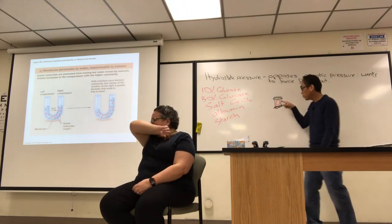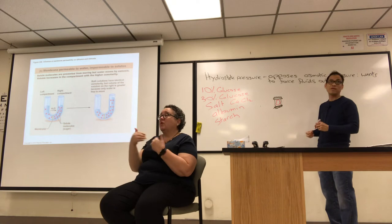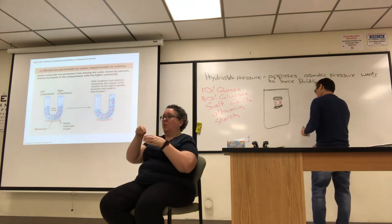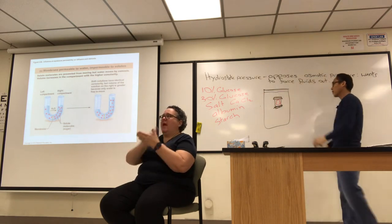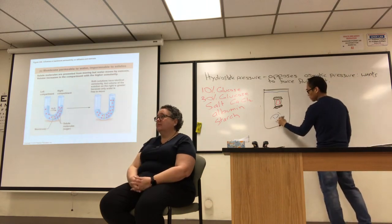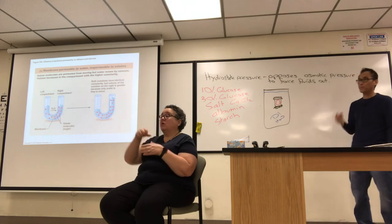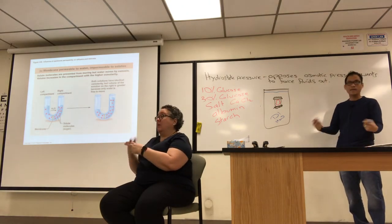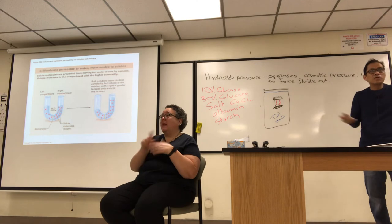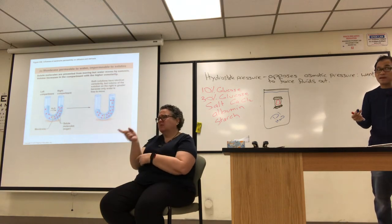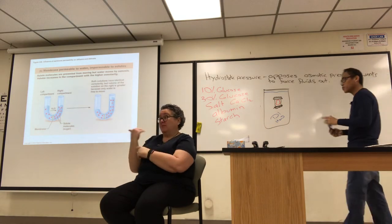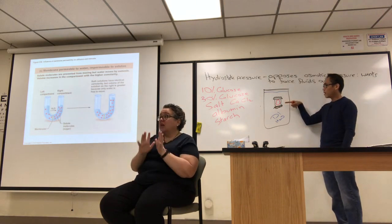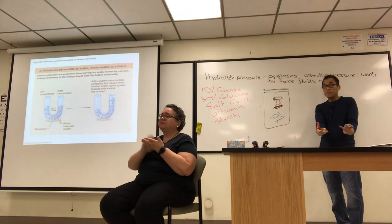Whatever your group has, put your solution in the tubing and submerge it in DI water for an hour. Before you drop it in, you've got to get your pre-weight — weigh it before you submerge it. Then submerge it and wait an hour. If you finish your microscope lab during that hour incubation, just come back when the hour is up, blot it off, and get your post-weight. It should have gained weight.